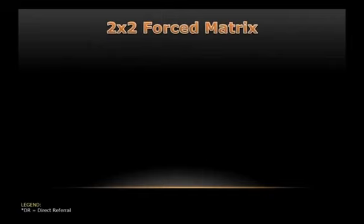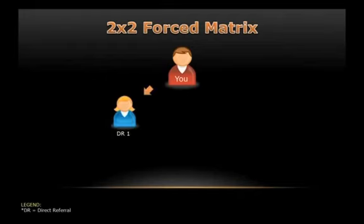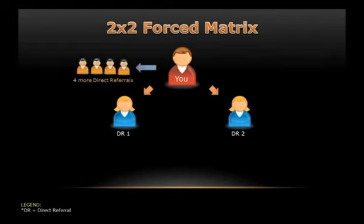Now let us proceed to the 2x2 forced matrix and why it is called a forced matrix. That is you at the top, your direct referral number 1 and your direct referral number 2. Since TNMM is very attractive to your friends, you have 4 more direct referrals who are excited to join. But where are you going to put them? Since in the 2x2 matrix, only 2 persons are allowed to be under you.